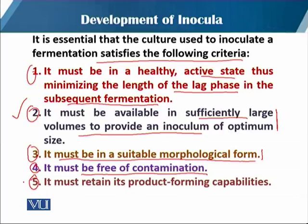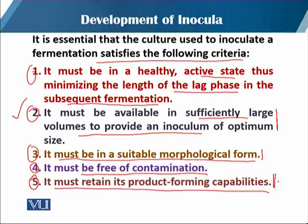The fifth criterion is that the inoculum must retain its product-forming capabilities. Sometimes when we use process organisms from a preserved or storage stock, they may lose their production ability. We have to reculture and reinstate the organism in order to restore its capacity for product formation. These five criteria must be met before we can hope for better production.